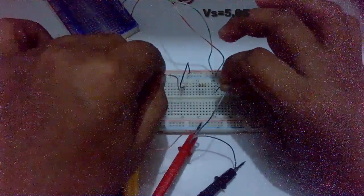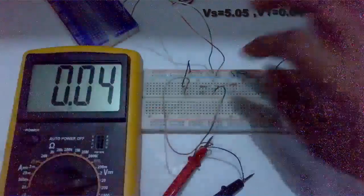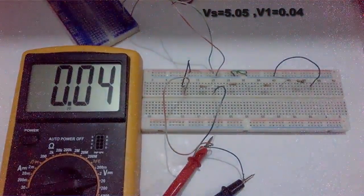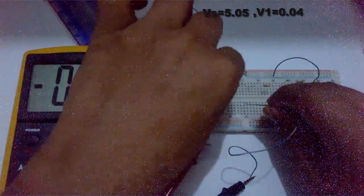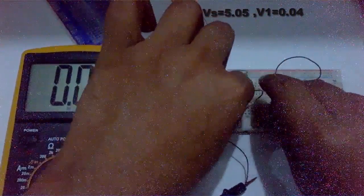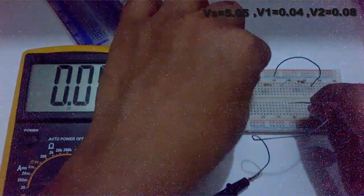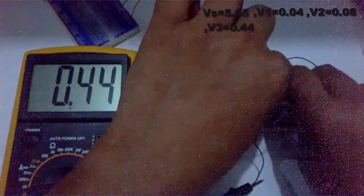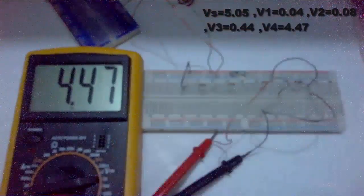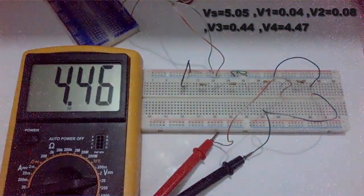The voltage across the first resistor is 0.04V. The voltage across the second resistor V2 is 0.08V. The voltage across the third resistor is 0.44V. And the final resistor voltage is 4.47V.